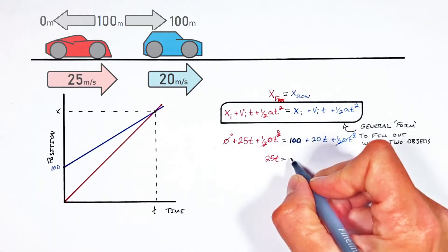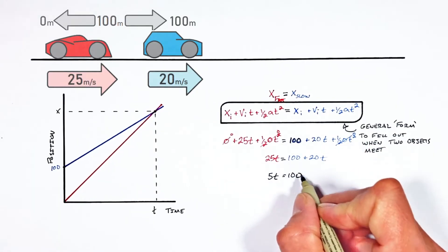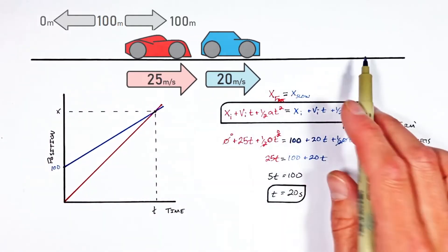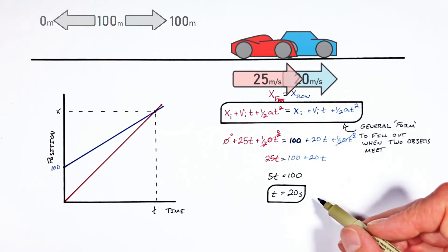And cleaning this all up a little bit, we can solve for time. And we find that it's going to take 20 seconds for the fast car to catch the slow car.